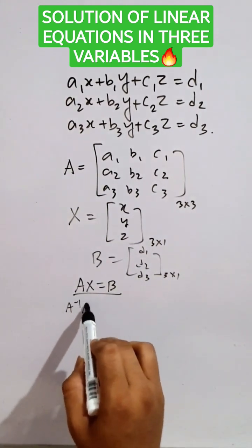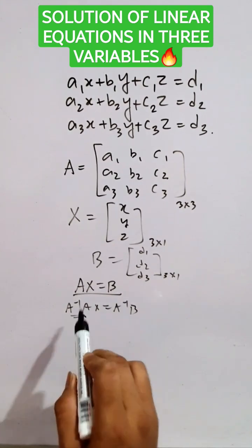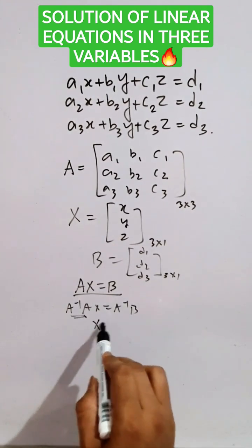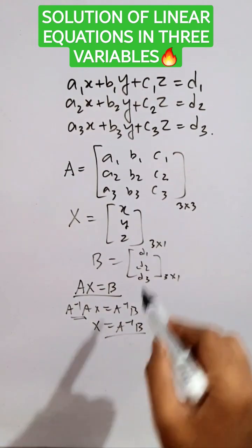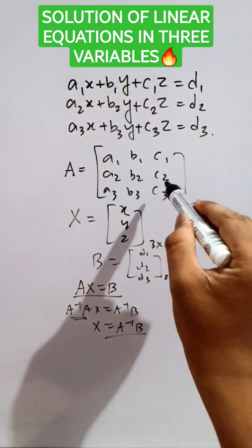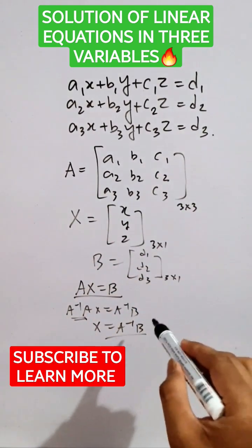We multiply both sides with A inverse. We will get I into X, which equals X, equals A inverse times B. So here we have to find A inverse of this given matrix A and multiply it by matrix B. We will get the answer by comparing both sides.